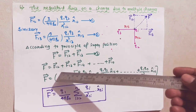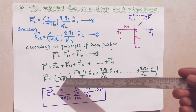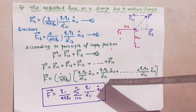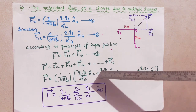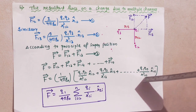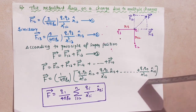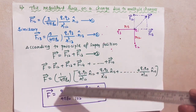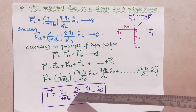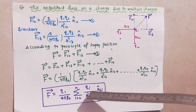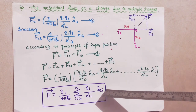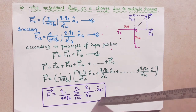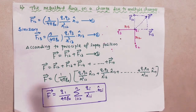Now you have to write this equation: vector F equals 1 over 4πε₀ times q1 q2 divided by r²₁₂ unit vector r-cap₁₂, plus q1 q3 divided by r²₁₃ r-cap₁₃, and so on up to n terms. Here q1 is a constant term. From using the summation equation you write: vector F equals q1 over 4πε₀ times the sum from i equals 2 to n of qi divided by r²₁ᵢ into unit vector r-hat₁ᵢ. This is the equation of the resultant force on a charge due to multiple charges. Thank you.